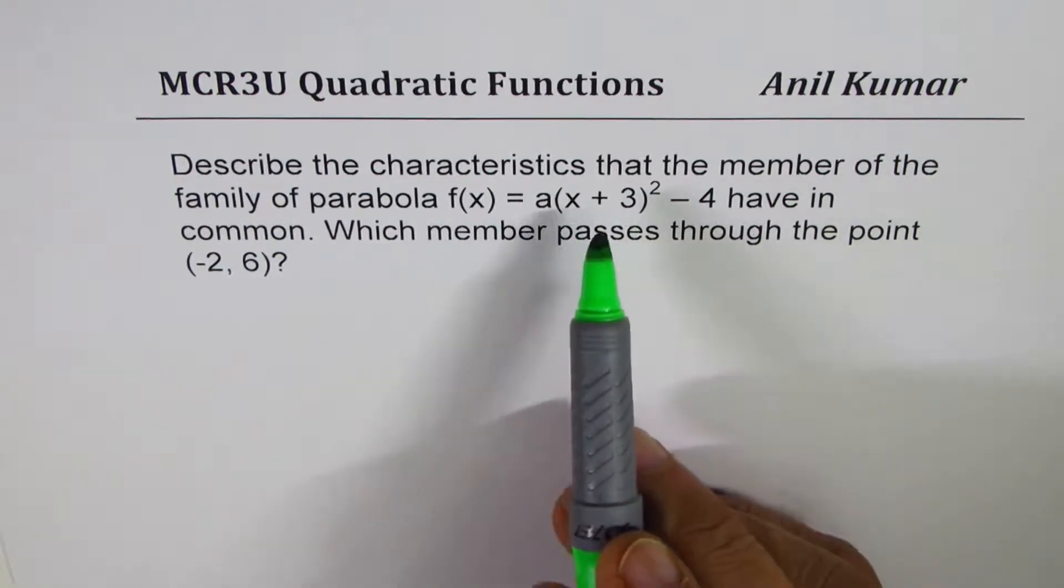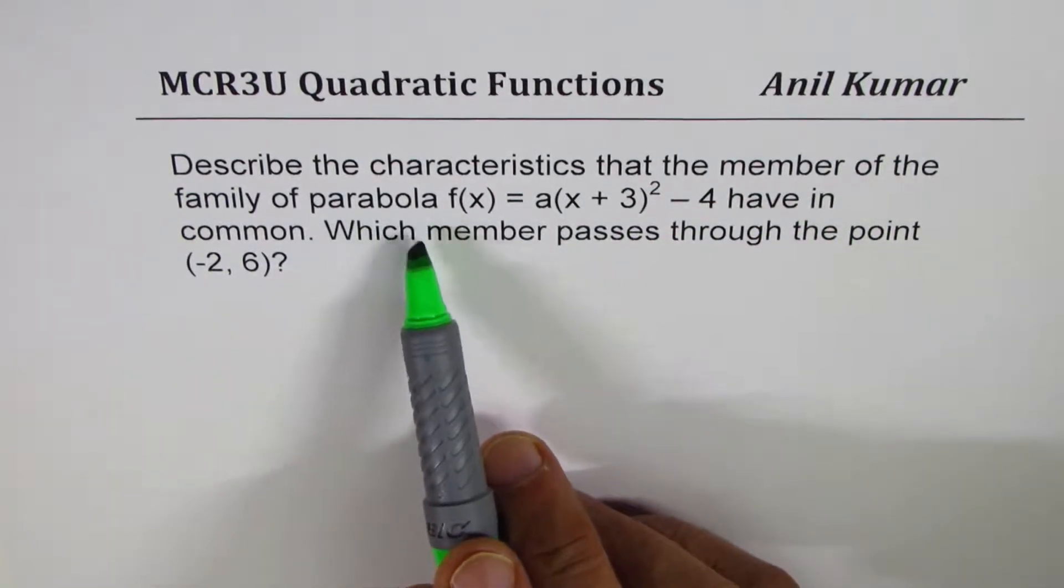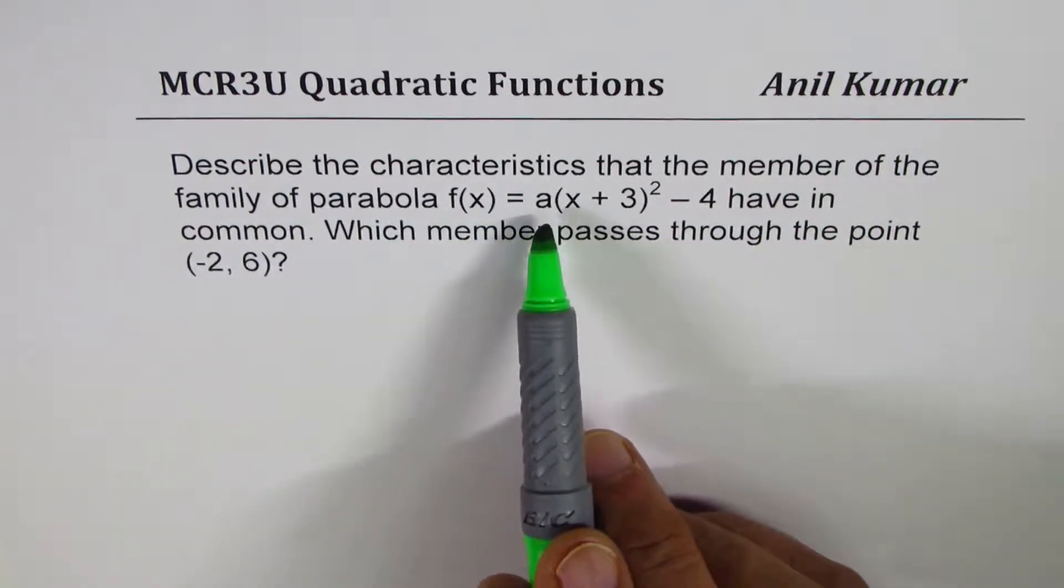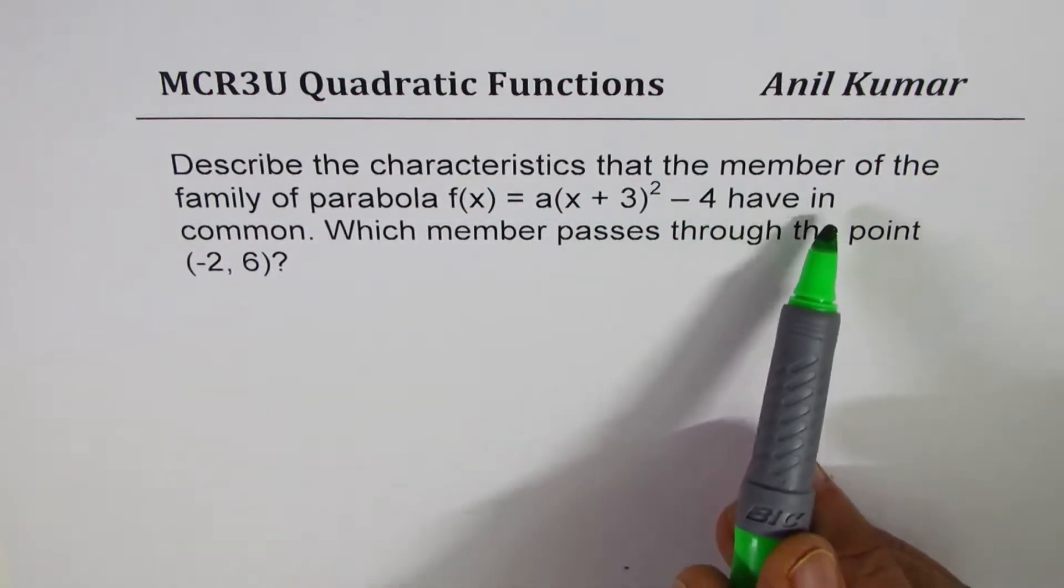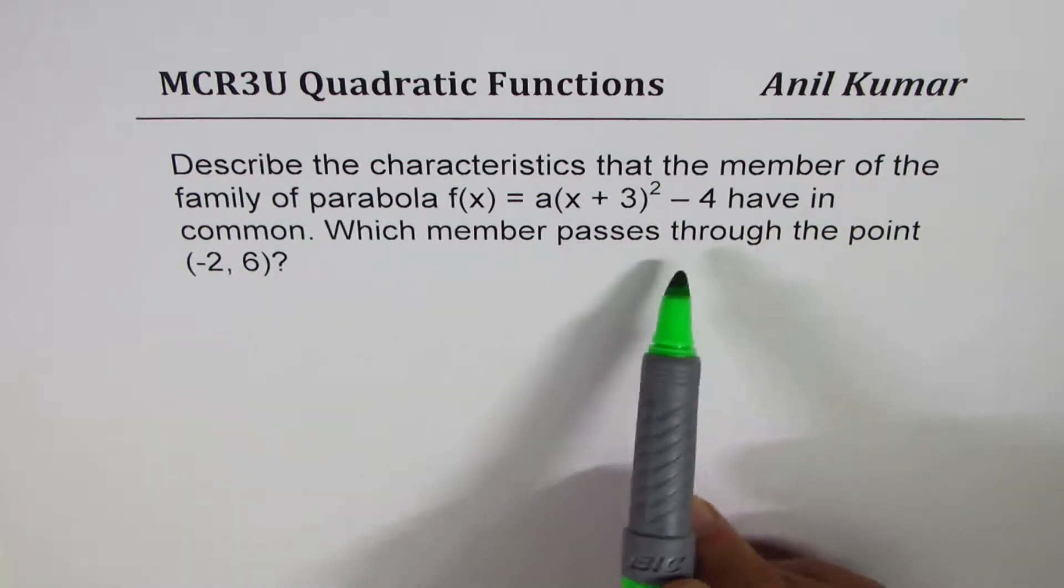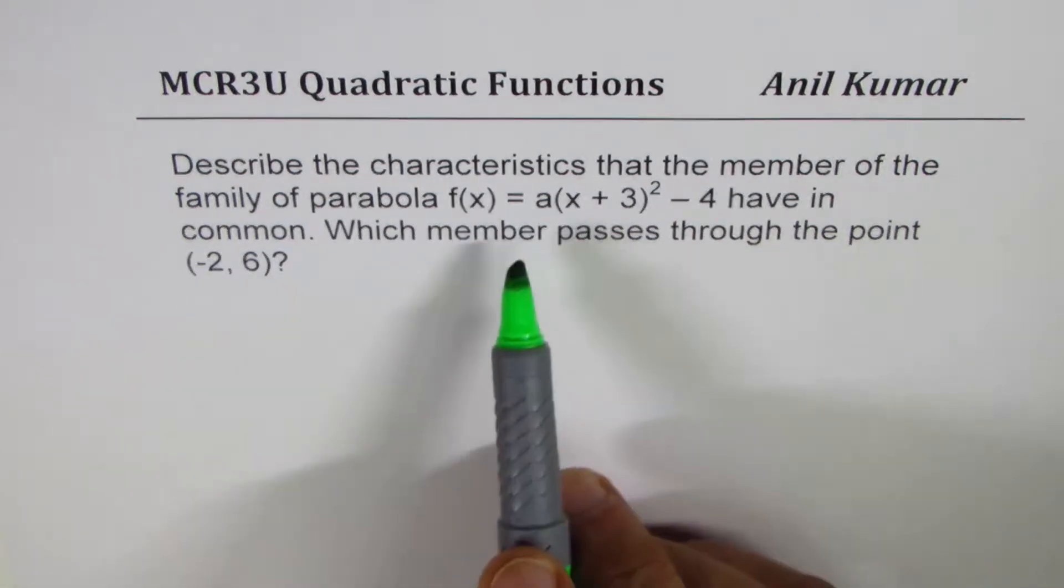Describe the characteristics that the member of family of parabola f(x) = a(x + 3)² - 4 have in common. Which member passes through the point (-2, 6)?